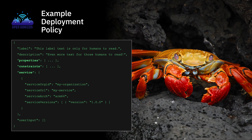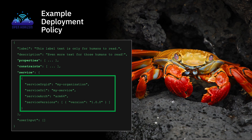Now let's look at an example deployment policy. Deployment policies contain properties and constraints as well, plus a label and description like patterns. But like a pattern, a deployment policy also contains a service specification. Notice it's a single service — not an array — just a structure containing a four-tuple that identifies the service. There's also a user input section at the bottom, but I won't go into detail about that.